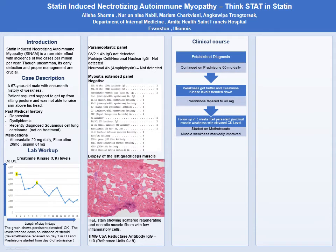His clinical course thereafter is shown here. He was continued on prednisone while awaiting the paraneoplastic panel results. His weakness improved and he was tapered to 40 mg of prednisone. Follow-up in three weeks, however, did not show the improvement we expected — he had persistent proximal muscle weakness with elevated creatine kinase levels. Hence, we started him on an immunosuppressant; he was started on methotrexate, and his muscle weakness was markedly improved and he continues to do better.